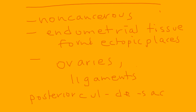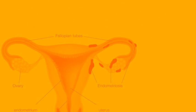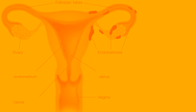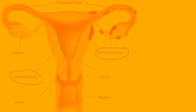Let's look at a diagram of the female reproductive organs. The area I want you to focus on is the endometrium — the inside of the uterus — where tissue normally resides. The green area shown here represents the normal location of endometrial tissue.